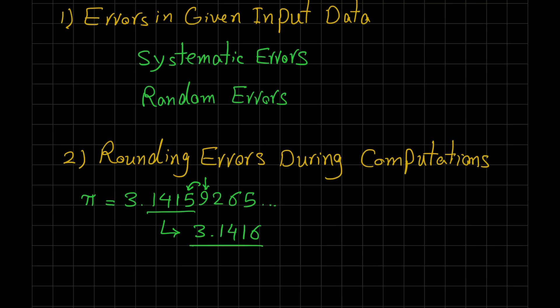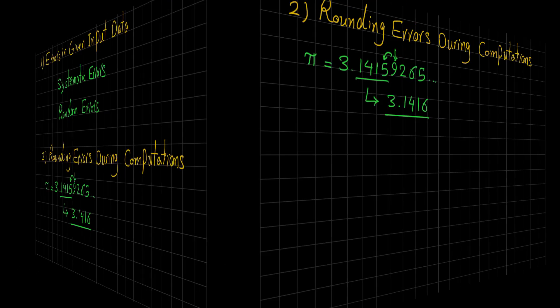The limitation of floating point numbers in a computer leads sometimes to a loss of information that, depending on the context, may or may not be important. So that's the second type of error that you have to be aware of in your numerical analysis.